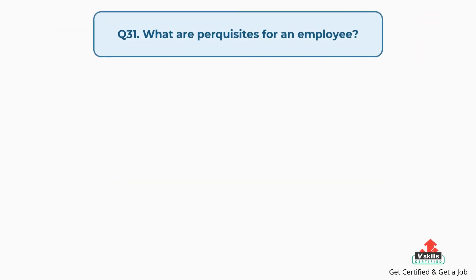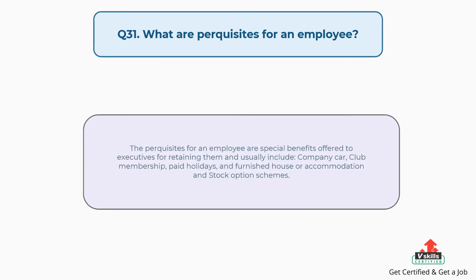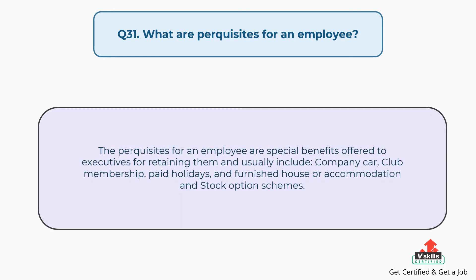Question number thirty-one: What are perquisites for an employee? The answer is, perquisites for an employee are special benefits offered to executives for retaining them, and usually include company car, club membership, paid holidays, furnished house or accommodation, and stock option schemes.